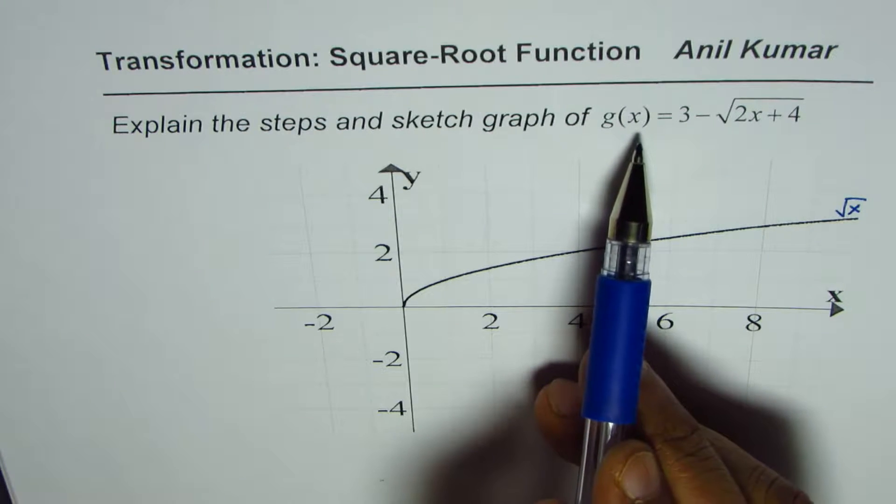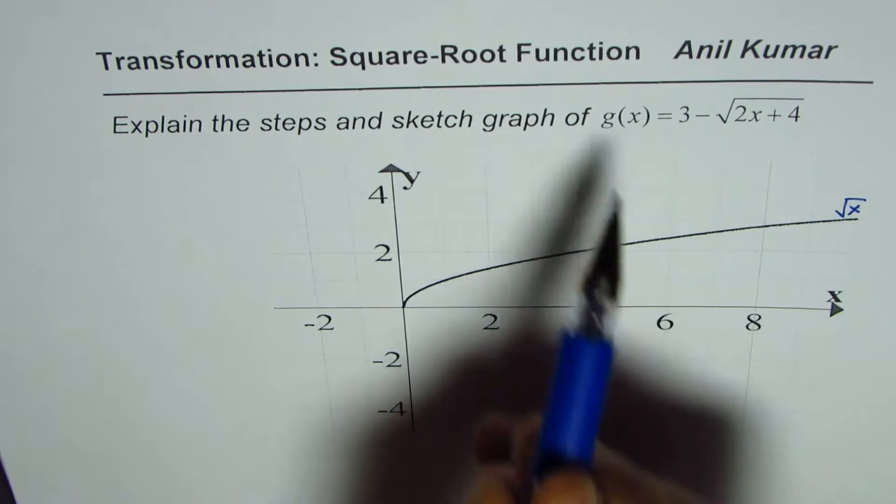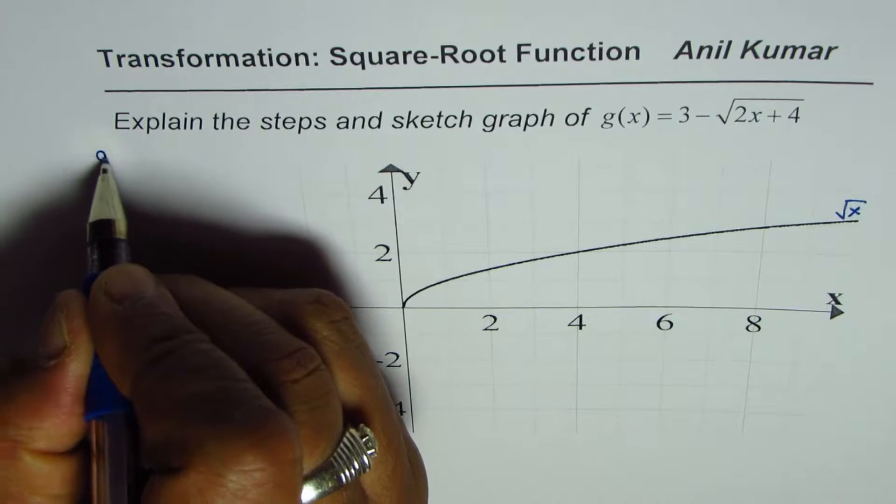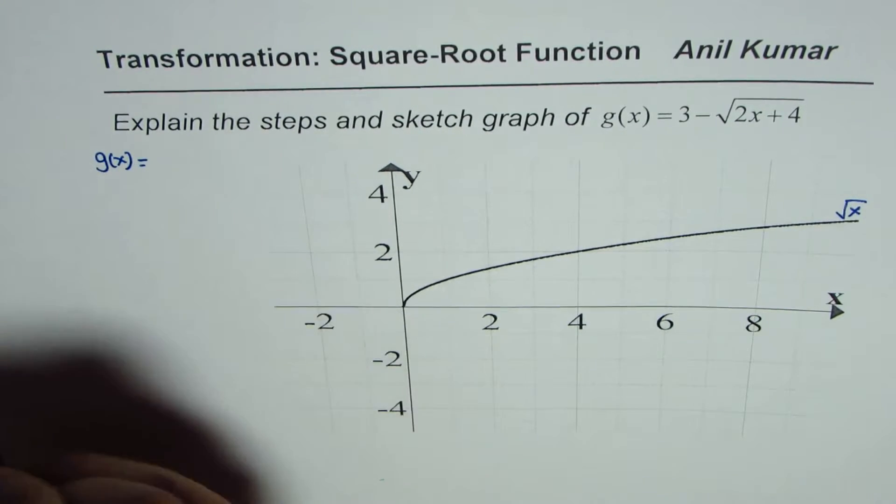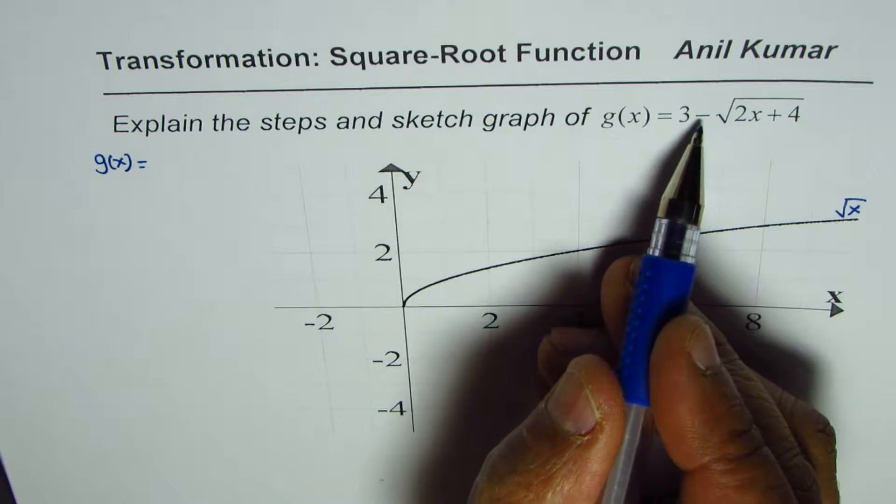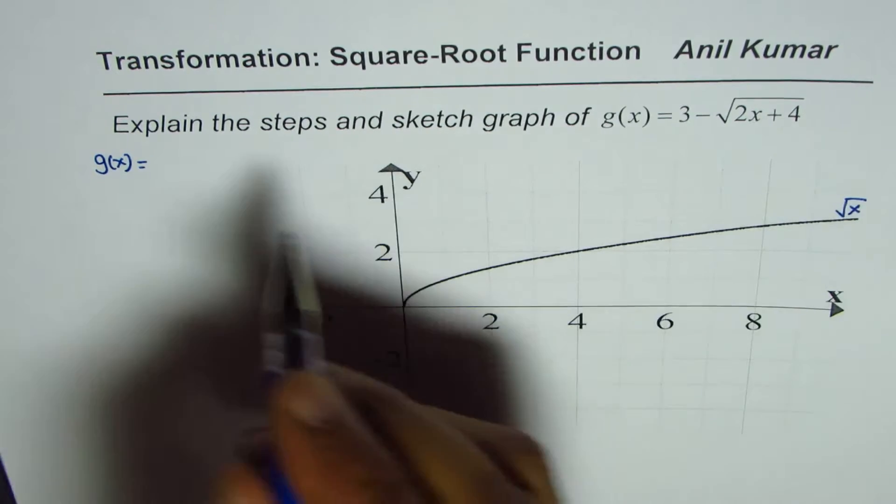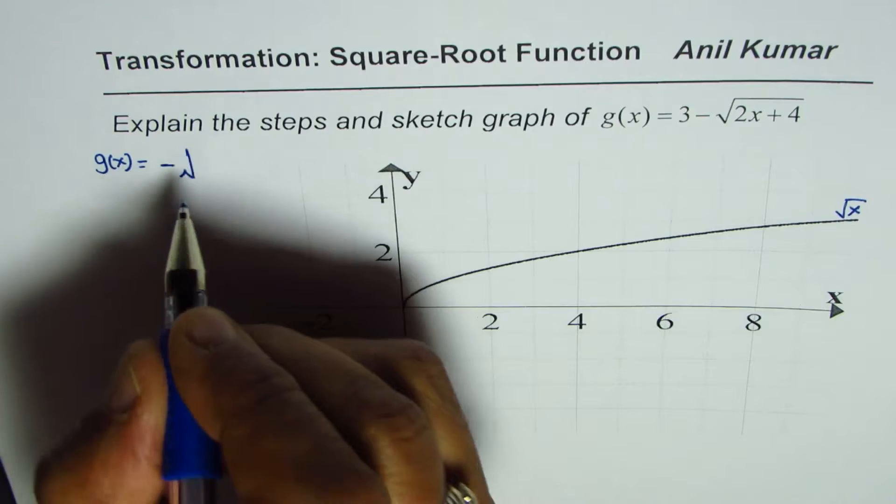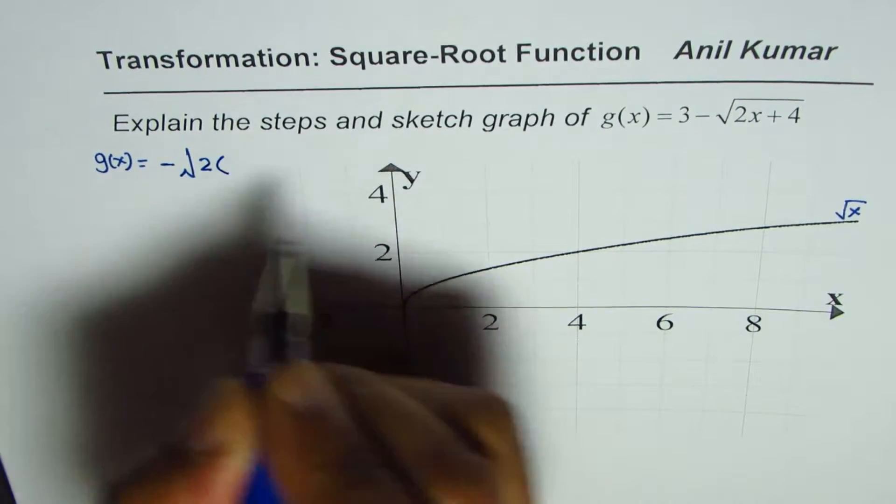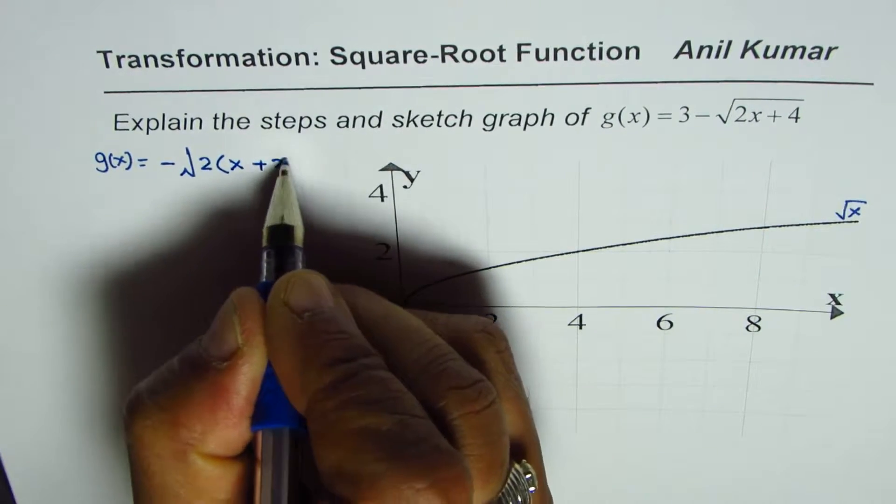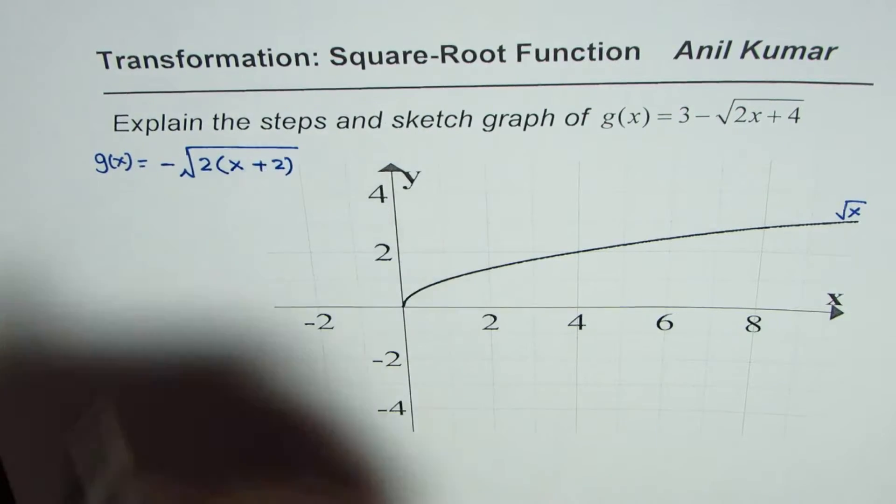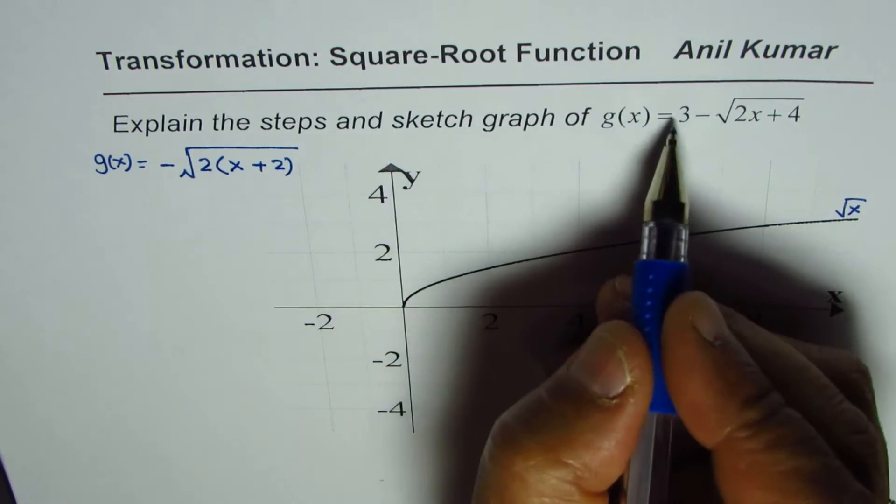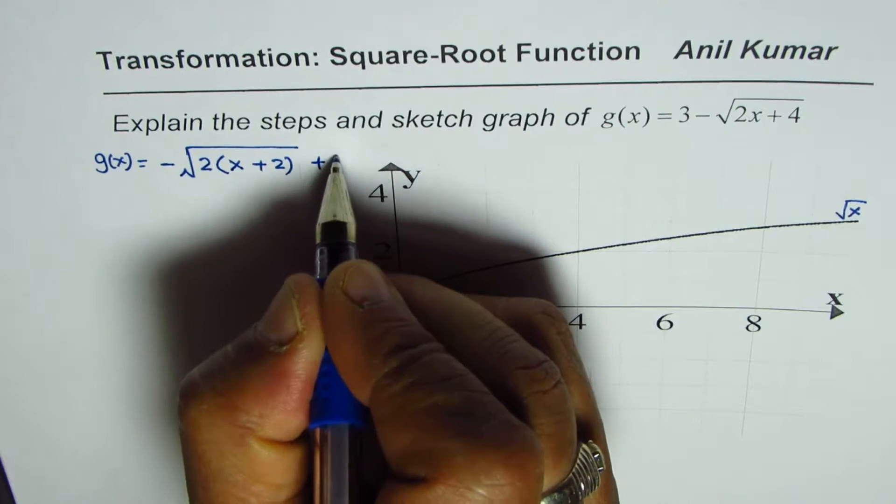So let me rewrite this function as g(x) equals 3, so within square root, this 3 I'll write later, so I have minus square root of—we need to factor 2, any coefficient of x should be factored—that gives you absolutely correct horizontal transformation. And then I'm writing plus 3.